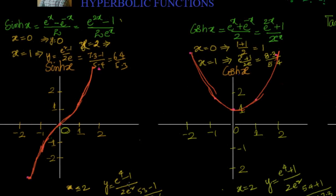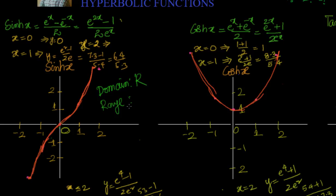Now let us make an interesting observation. For hyperbolic sine, looking at the domain: there are no restrictions on x, so the domain is ℝ. What is the range? The function can take all values, so the range is also ℝ.